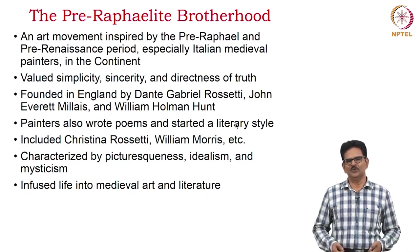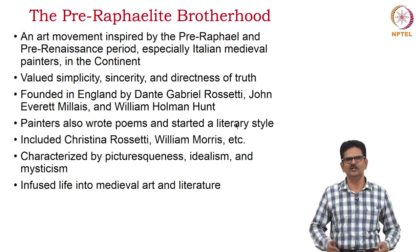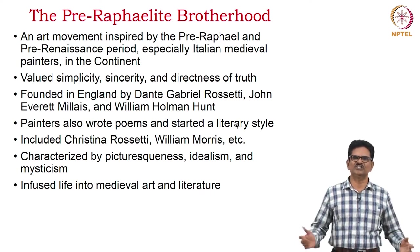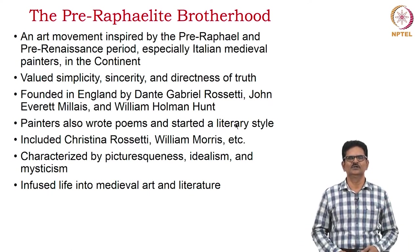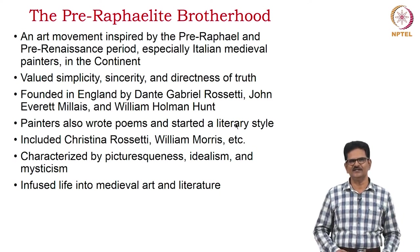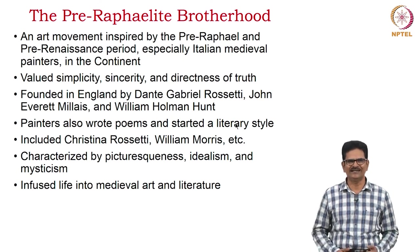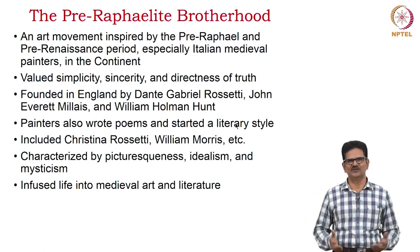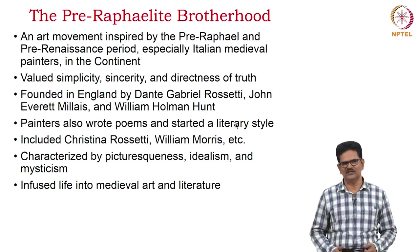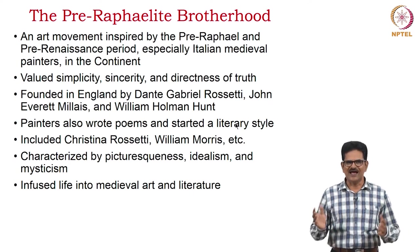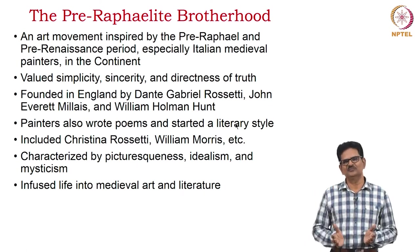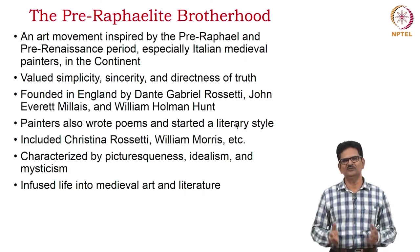This is a very important phenomenon of Victorian time called the Pre-Raphaelite Brotherhood. It is an art movement inspired by the Pre-Raphael and Pre-Renaissance period, especially Italian medieval painters. This movement valued simplicity, sincerity, and directness of truth. It was founded in England by Dante Gabriel Rossetti, John Everett Millais, and William Holman Hunt. Many painters wrote poems and started a literary style which included Christina Rossetti and William Morris. They used picturesqueness, idealism, and mysticism in their poems. They also infused life into medieval art and literature, and took the special shape of the Pre-Raphaelite Brotherhood.